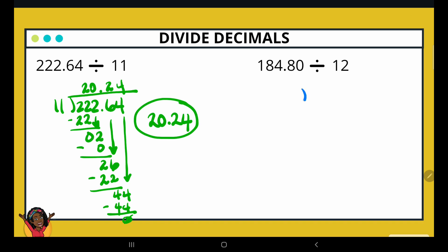Alright, let's set up our next example. 184.80 being divided by 12. Take that decimal point. Put it right up in the quotient. And then we can start dividing.